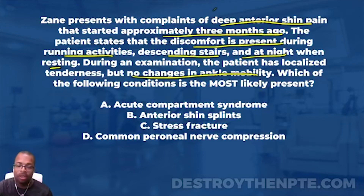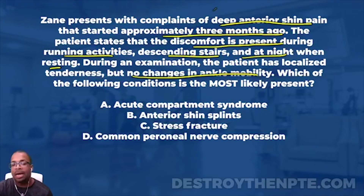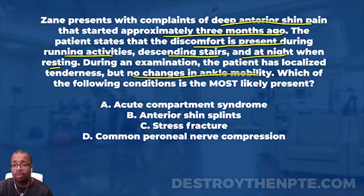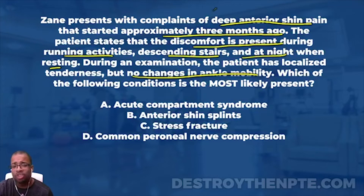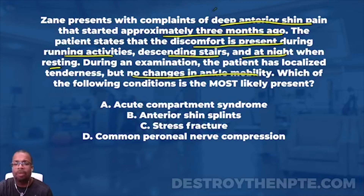Acute compartment syndrome - you better be familiar with that one for the NPTE. This condition is usually trauma-based, and I'm talking about severe traumatic accidents like a motor vehicle accident, falling off a ladder and breaking your leg. Acute compartment syndrome is a buildup of pressure inside the anterior compartment of the lower leg. The patient starts to have sensations of heaviness, fullness, and tightness in the lower leg, complaints of numbness and tingling, and often won't have a dorsopedal artery pulse because the pressure is pressing on the blood vessel.